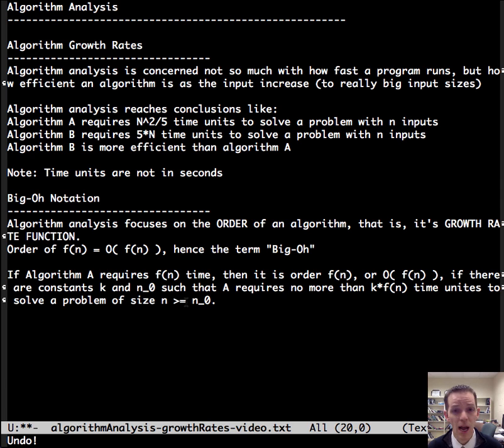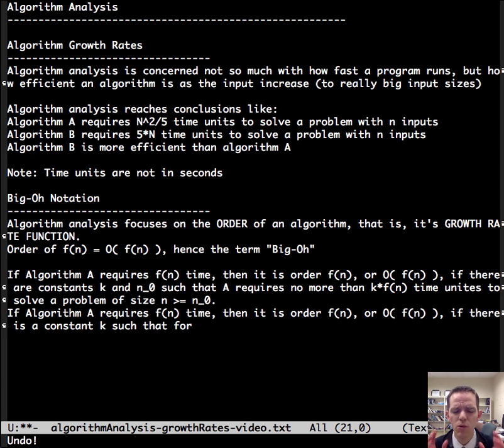And we can pick for all N's above N0. Now, as we mentioned before, algorithm analysis is only concerned with really big inputs. So let's simplify that formal definition a little bit as we get to large inputs. So algorithm A requires F of N time, then it's order F of N, or big O F of N. If there's a constant K such that for large values of N, then the function is always less than or equal to a constant times that function.